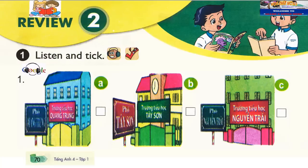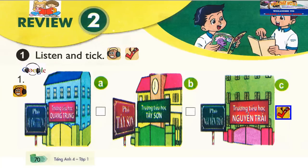1. What's the name of your school, Daisy? Nwitten Chai Primary School. Where is it? It's in Nwitten Chai Street.